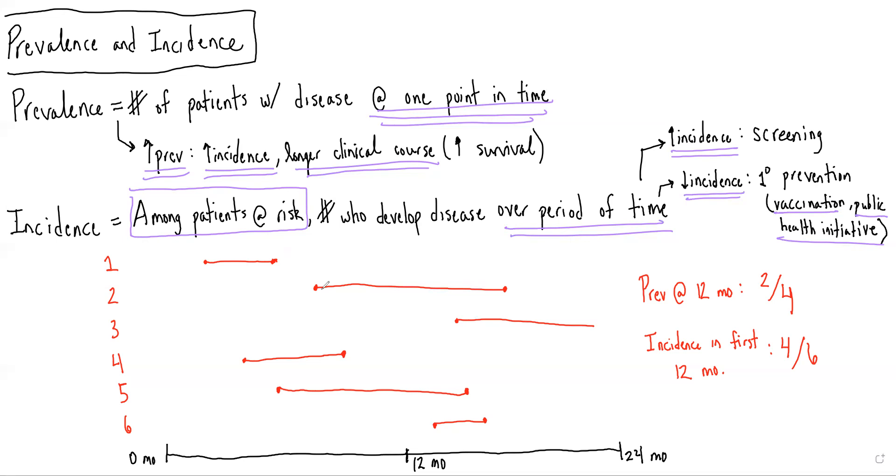If we were to determine the prevalence at 12 months, what we would do is draw a vertical line at 12 months and say, how many patients are left in the population, and how many have the disease? We see that patient 1 and patient 4 have already passed away before 12 months. So at the 12-month mark, there are four total patients, and two of them have the disease, patients 2 and 5, and therefore the prevalence at 12 months is 2 out of 4.